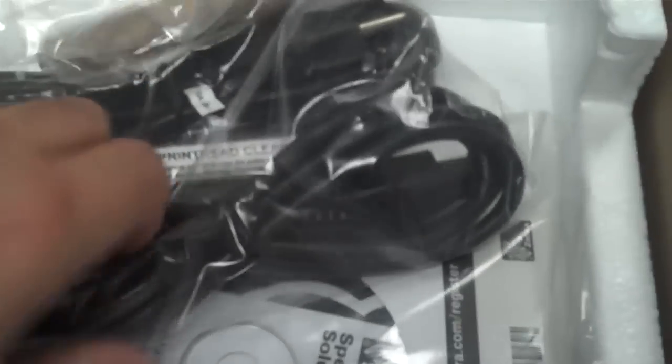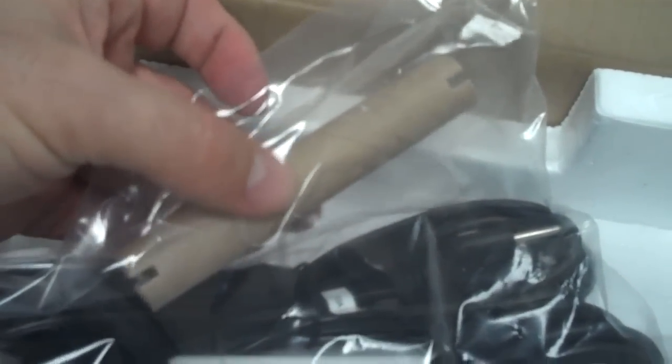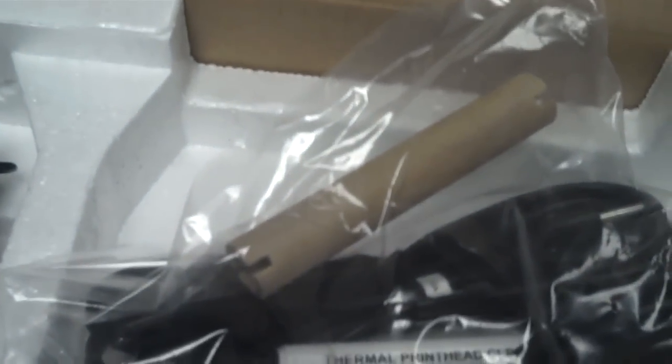As you'll notice, the printer is going to come with a power supply, a power cord, and the most important thing is this roll for the labels. So let's unpack all of this right now.